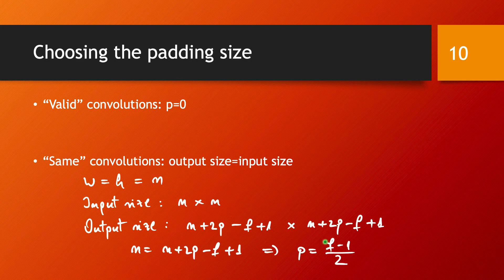If you were to choose a filter of even size, the division by 2 wouldn't give you an integer, meaning you would pad with slightly different amounts on top versus bottom and left versus right, giving you a slightly asymmetrical situation. While this could still work, filters are typically chosen of odd size so that you have symmetric padding on top, bottom, left, and right.